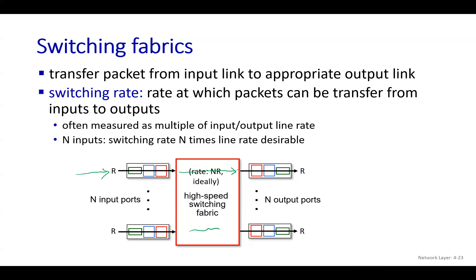Apart from forwarding, we also need to consider the switching rate of the fabric — the rate at which it forwards packets to the output port. This depends on the input ports' transmission rate. In this example, if each input port receives packets at R bits per second and we have N input ports, the combined transmission rate will be N×R.